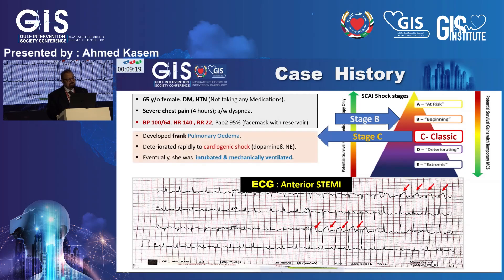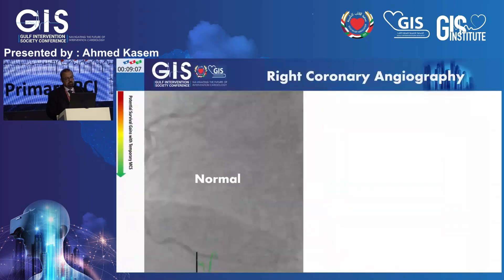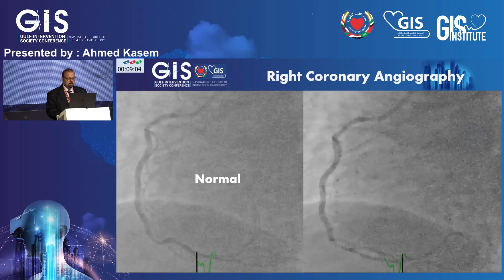The patient within a few minutes developed frank pulmonary edema and deteriorated rapidly to a shock state. Vasopressors were started, and eventually intubation and mechanical ventilation were required. The patient was then taken to the cath lab for primary PCI.